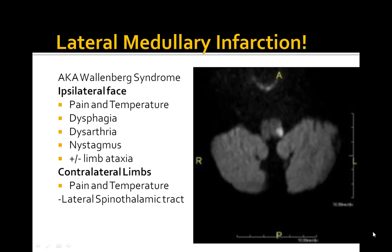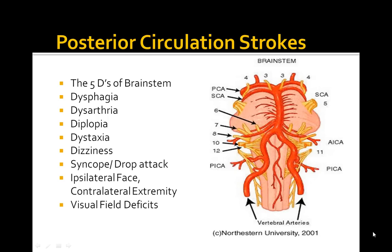The answer is lateral medullary infarction — Wallenberg syndrome. Ipsilateral face would have loss of pain and temperature, dysphagia, dysarthria, and nystagmus. The contralateral side would lose pain and temperature, affecting the lateral spinothalamic tract. Also important to know are the 5Ds of the brainstem: dysphagia, dysarthria, diplopia, ataxia, and dizziness, as well as syncope and drop attack.